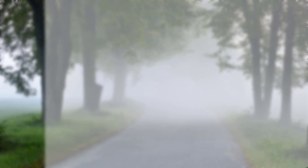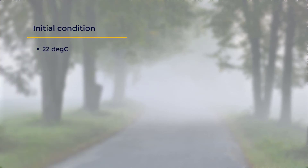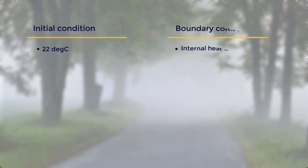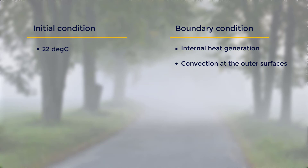Let's perform a transient thermal analysis to see how the temperature increases with time. Initially, the iron is at an ambient temperature of 22 degrees Celsius. We will apply internal heat to the heating element to model heat generation. In this example, the parts are modeled with shared topology instead of contact, which ensures no temperature drop at the interfaces. Heat is also dissipated from the iron surfaces to the environment by convection.